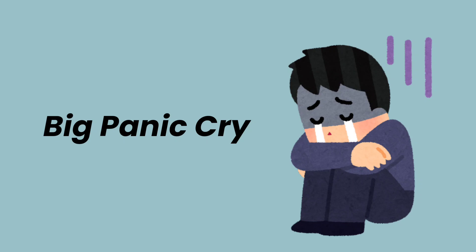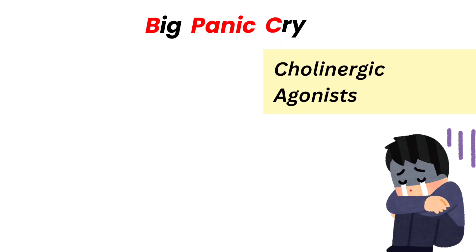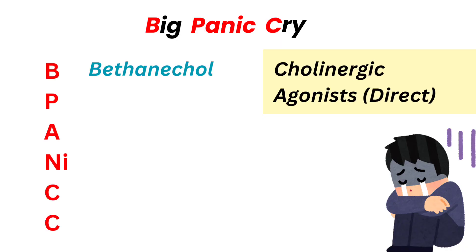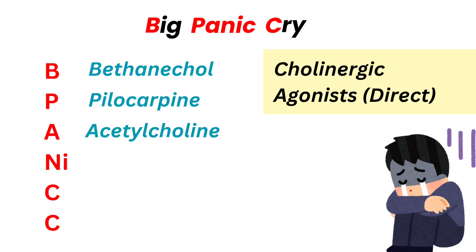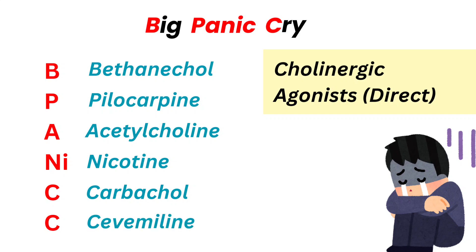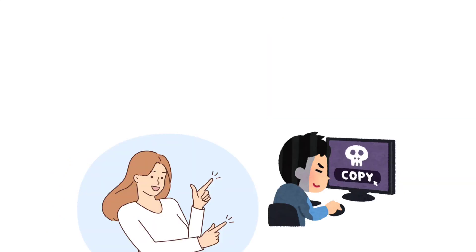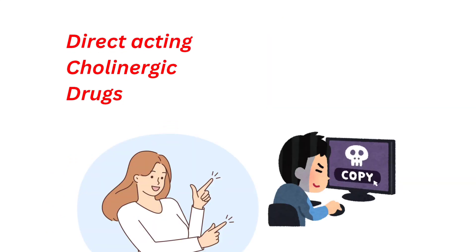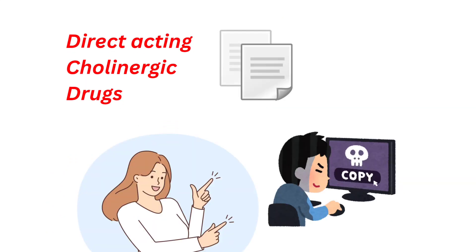Here is our mnemonic for direct acting cholinergic agonists: B for bethanecol, P for pilocarpine, A for acetylcholine, Ni for nicotine, C for carbachol, and C for cevimeline. Direct acting cholinergic agonists mimic the action of acetylcholine.